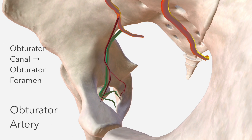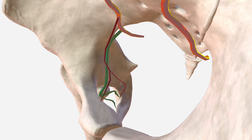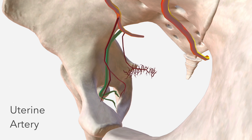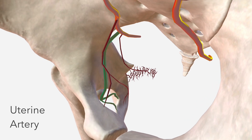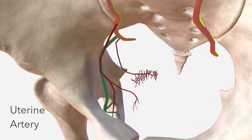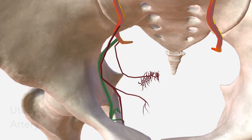We're looking at a female model here, and the next branch only exists in female anatomy. It is the uterine artery, which supplies the uterus, the vagina, the ovaries, and the fallopian tubes. That's the uterine artery there.